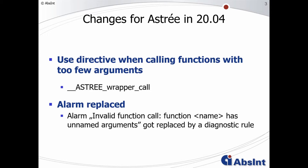The last change in Astray I will cover today is that we removed the alarm 'invalid function call — function name has unnamed argument.' Of course it is not just removed, but got replaced by a new diagnostic rule in the diagnostic rule set. Unnamed parameter declarations are now reported as a violation of this rule.